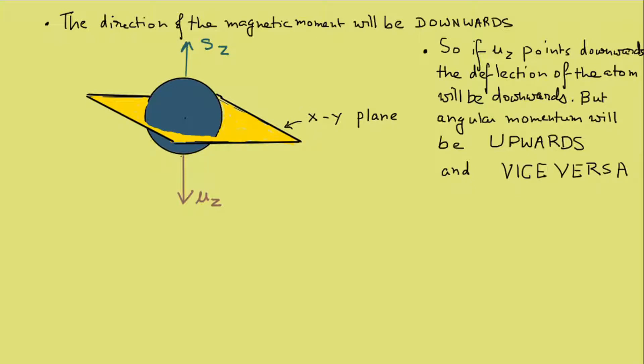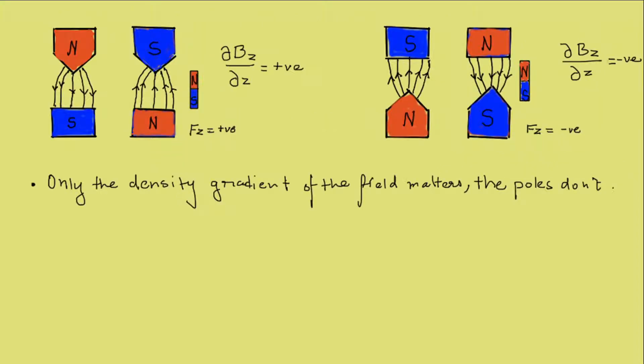In addition to that, the arrangement of poles of the magnets do not matter. What matters is only the magnetic field gradient. Thus, the vector mu will always move from low to high magnetic field in density, irrespective of the arrangement of the poles.